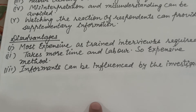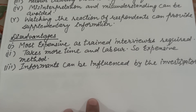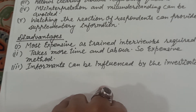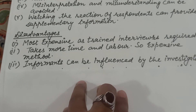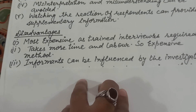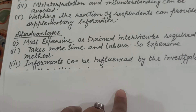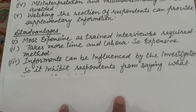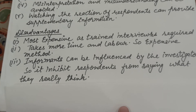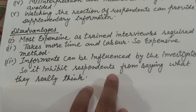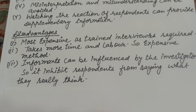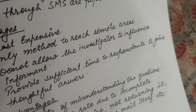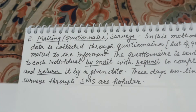Next disadvantage: informants can be influenced by the investigator. This inhibits respondents from saying what they actually think, as they can be convinced by the investigator himself. Now, moving to the next method, that is the mailing questionnaire survey.